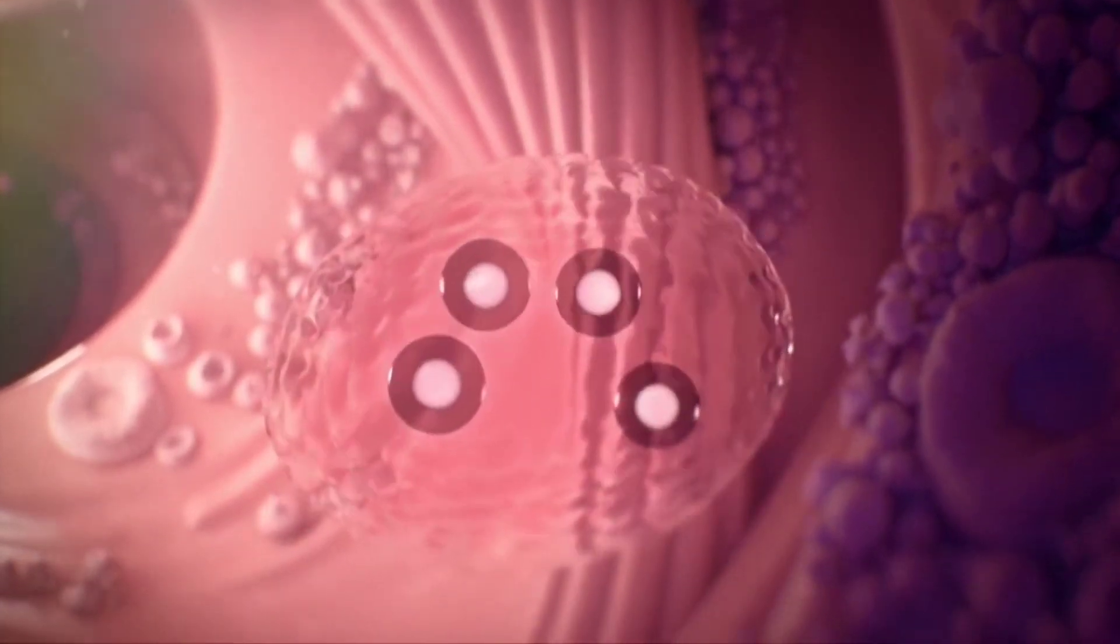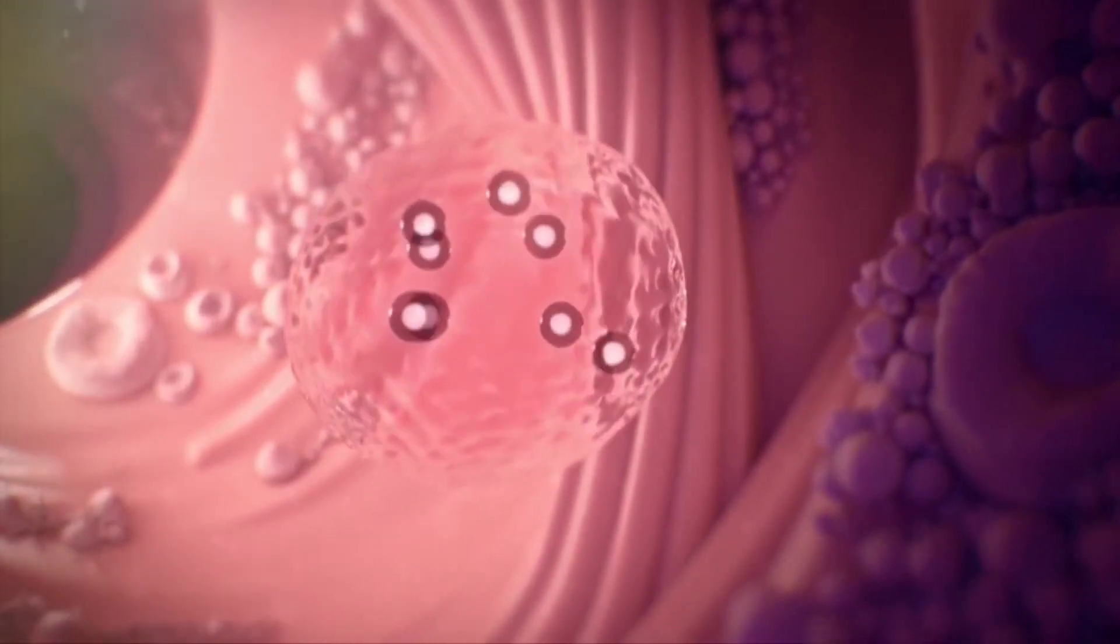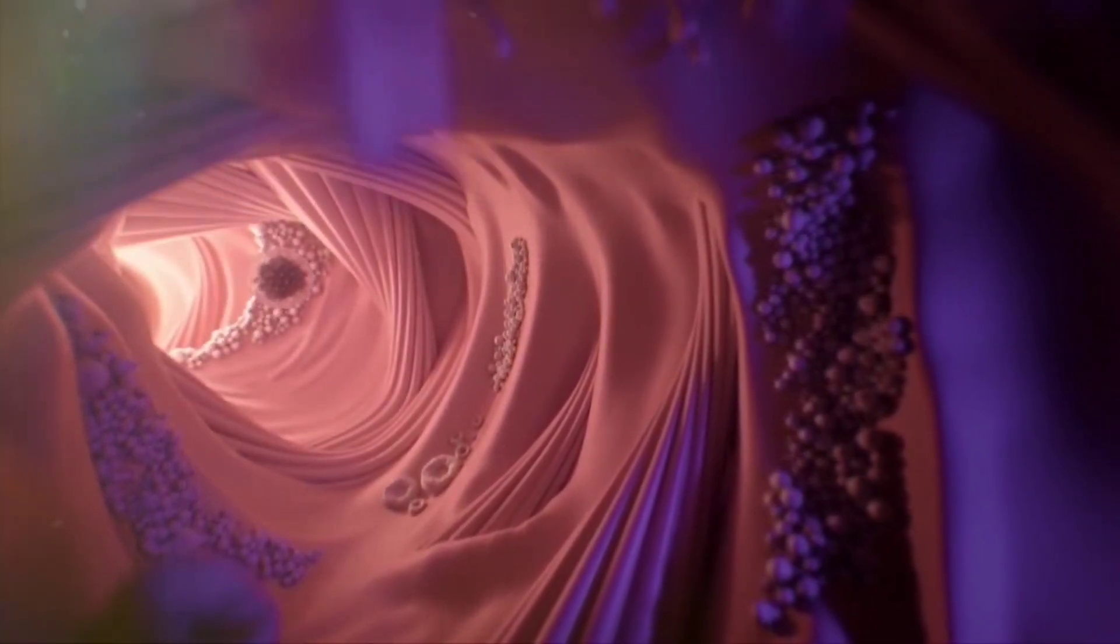The zygote starts to divide into a cluster of cells and begins to travel to the friendly and safe habitat of the uterus. When the zygote is divided into a bubble of cells,